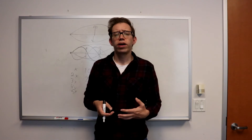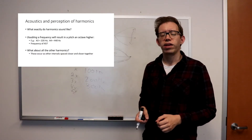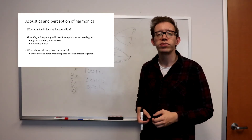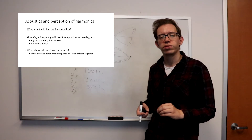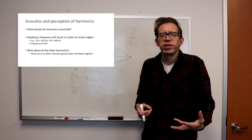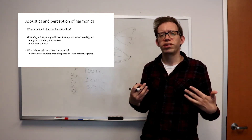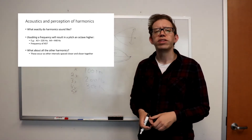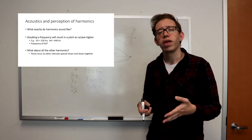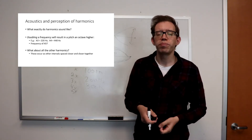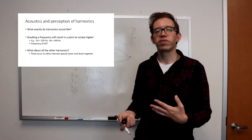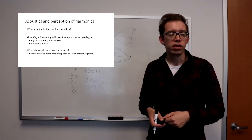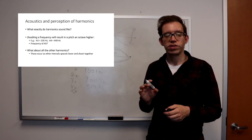Now we've talked about how strings and vocal folds can vibrate in multiple ways at once to produce a harmonic series. But now I want to talk about what the harmonics actually sound like. When you hear someone say 'ah,' you just hear that single pitch — you don't really hear a whole bunch of pitches simultaneously. I want to convince you that all of those pitches are there. In fact, the reason you can distinguish different vowels from each other is actually rooted in the fact that multiple pitches are being produced all at once.